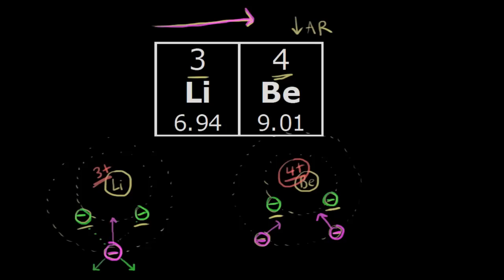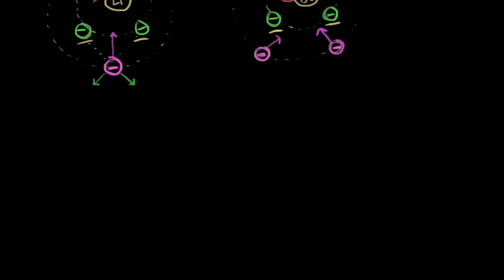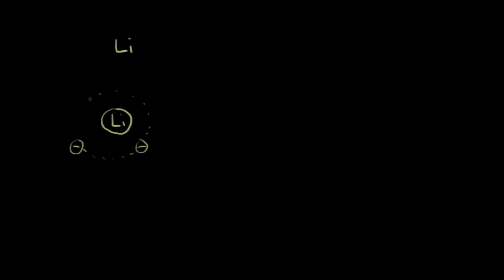Let's look at ionic radius now. Ionic radius can be kind of complicated, so this will be a simple version. If we take a neutral lithium atom, we've drawn this several times — let's draw it once more. We have our lithium nucleus with three electrons: two electrons in the inner shell and one electron in the outer shell.